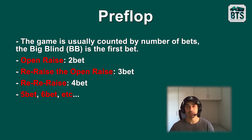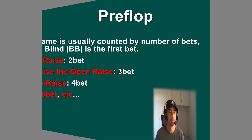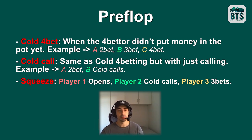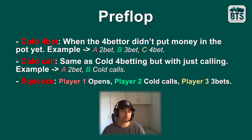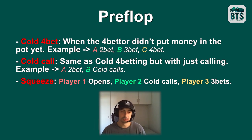There's also limping, which is just calling the big blind after it's already been posted. Then there's cold four-betting and cold calling. Cold four-betting means the player hasn't put money in the pot yet and then makes the four-bet. For example, under the gun open raises, cut-off three-bets, and then I'm on the button with pocket aces and decide to four-bet — that's my cold four-bet. Cold calling is the same concept but with just calling: player one open raises and player two just calls without raising, usually in position.